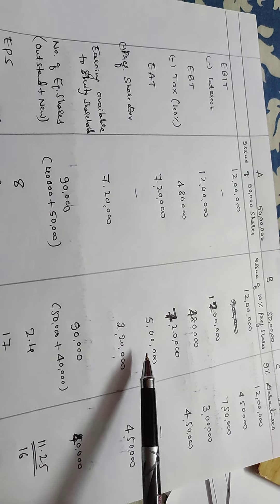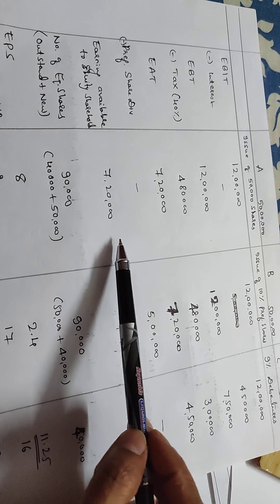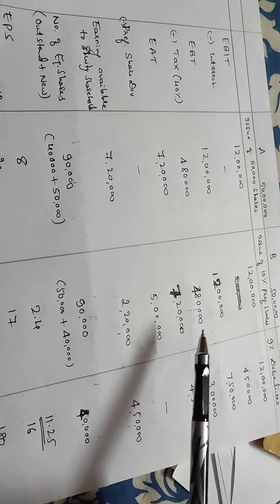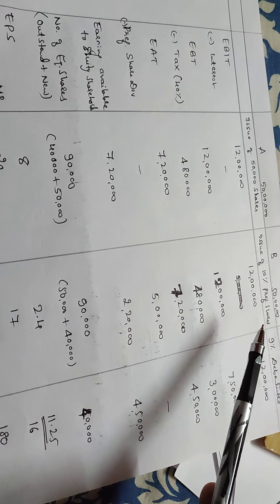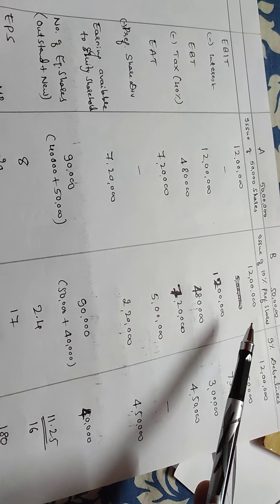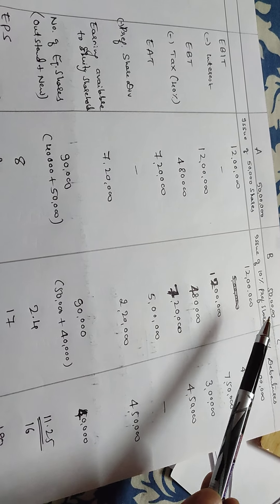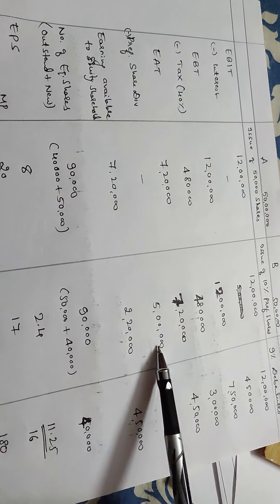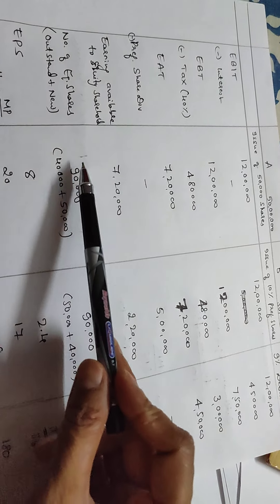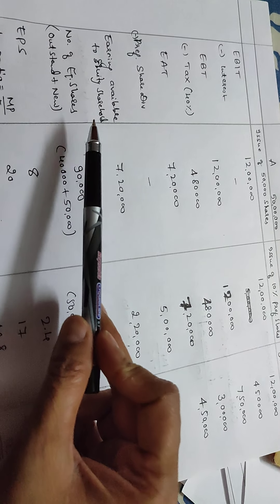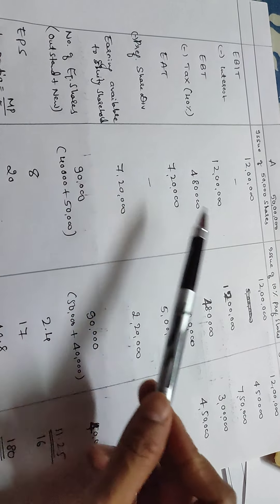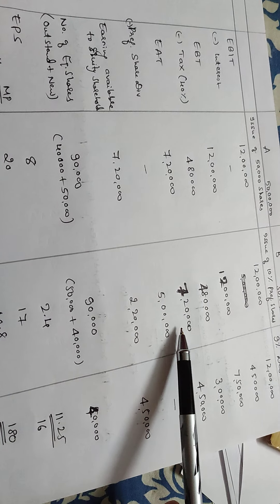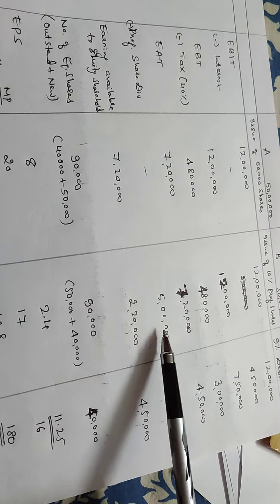Next, preference shares dividend. In the second alternative — issue of 10% preference shares on 50 lakhs — the preference dividend comes to 5,00,000. So earnings available to equity shareholders: in the first case (equity issue) it is 7,20,000; in the second case (preference shares) it is 2,20,000; and in the third case (debentures) it is 4,50,000.